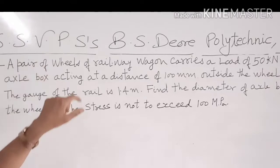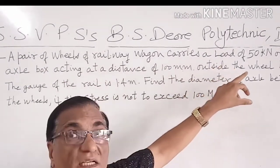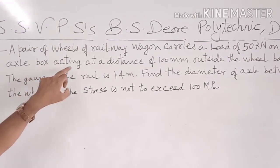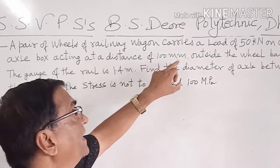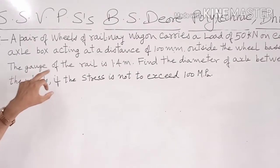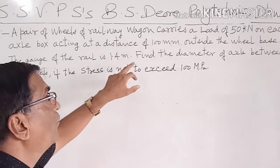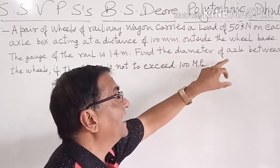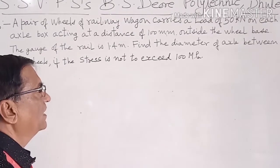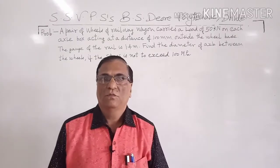A pair of wheels of railway wagon carries a load of 50 kN on each axle box acting at a distance of 100 mm outside the wheel base. The gauge of the rail is 1.4 meter. Find the diameter of axles between the wheels if the stress is not to exceed 100 MPa.